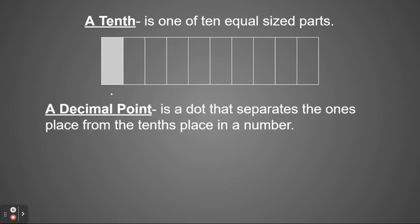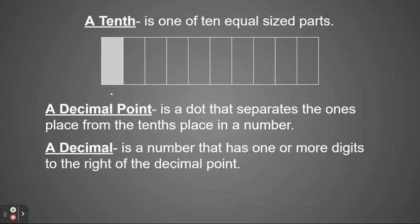A decimal point is a dot that separates the ones place from the tenths place in a number. The tenths place has a value in our place value system — it comes right after, to the right of a one followed by a decimal point. A decimal is a number that has one or more digits to the right of the decimal point, so you have the ones place, a decimal point, and anything to the right of that is a decimal.